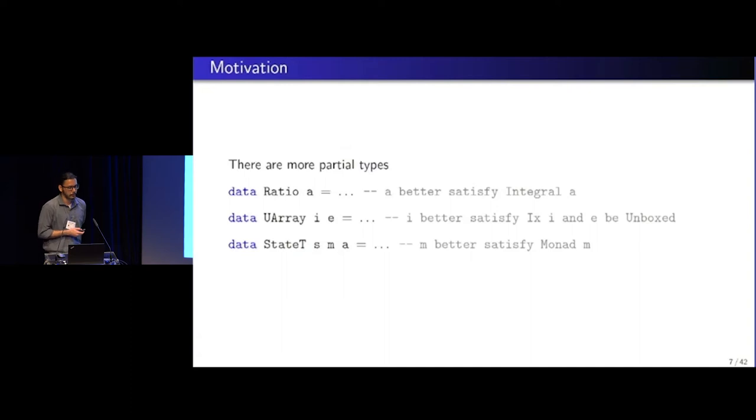Set is not just the only example. We have ratio where the type parameter A should be integral. UArray is more interesting because both the type parameters are constrained, where I needs to be indexable and E needs to be unboxed.